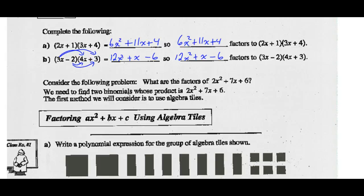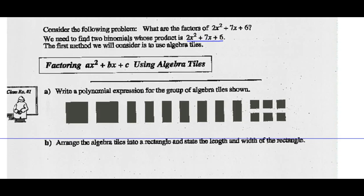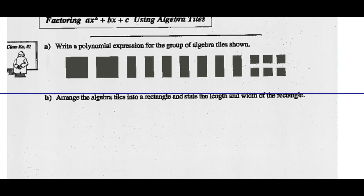Consider the following problem: what are the factors of 2X squared plus 7X plus 6? We need to find two binomials whose product is 2X squared plus 7X plus 6. The first method we could look at is called using algebra tiles. Write the polynomial expression for the group of algebra tiles shown. I've got 2X squareds — this is X by X — and this is X by 1.